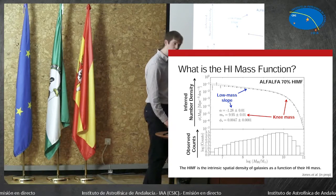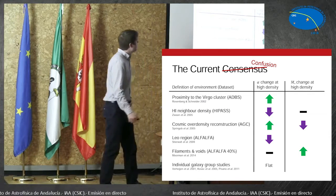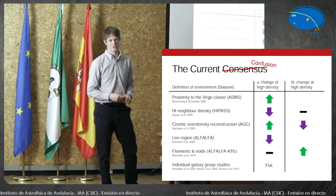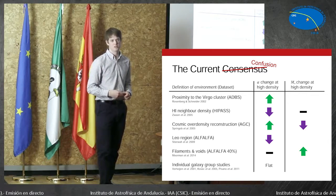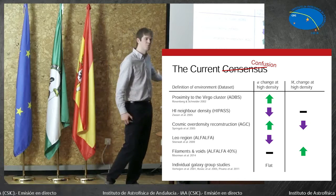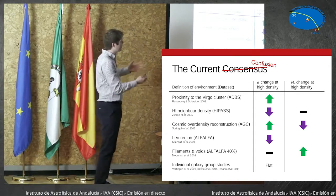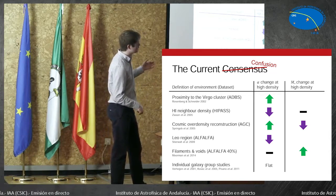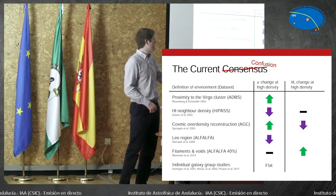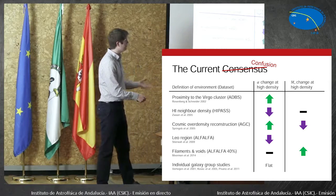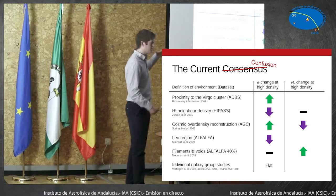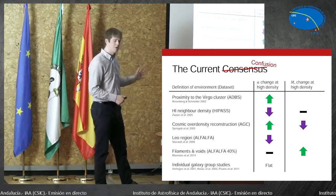So this is the H1 mass function. What I'm going to talk about is how this might vary with the galaxy's environment. The redshift range of Alfalfa — the maximum redshift is 0.06, so that's 18,000 km/s, but actually the science sample is cut at 15,000 km/s, so about z=0.05. Here is a selection of previous work done in this area. You can see there isn't really any consensus — a survey is equally likely to find that a higher density region means the slope is steeper as it is to find the slope is flatter, and the same for the knee mass. Each of these different surveys defines environment in a different way and observes the galaxies in a different way, which is probably some of the reason for this disagreement.